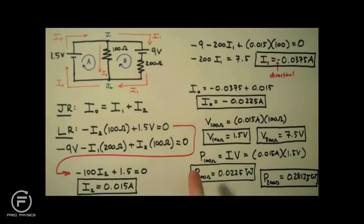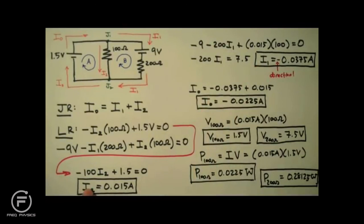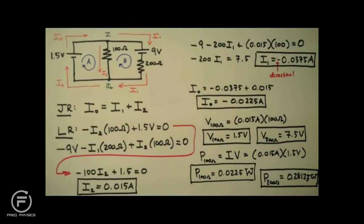And we're done. So there you have it — the current through, the voltage across, and the power dissipated by resistors using Kirchhoff's rules. I'm Jesse Mason. I hope this was helpful to you.